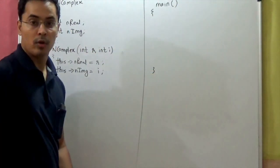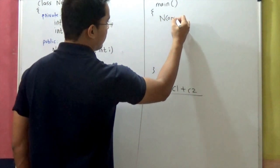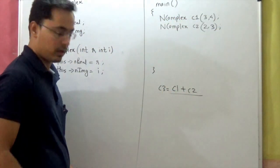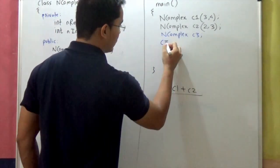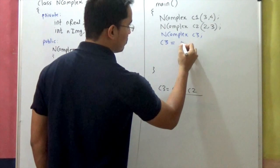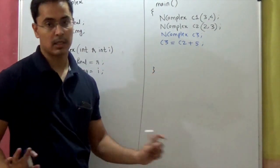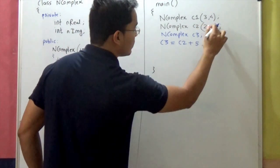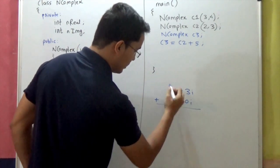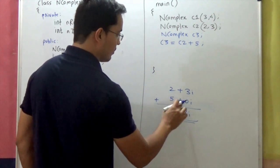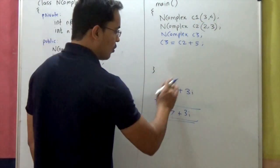We learned to overload the binary arithmetic operator plus, like c3 = c1 + c2. We created an object of type n complex and overloaded the plus operator with operator plus. Now what if we have a requirement like c3 = c2 + 5? You can add an integer to a complex number in mathematics. For example, c2 is 2+3i, and 5 is treated as 5+0i, so the result is 7+3i.